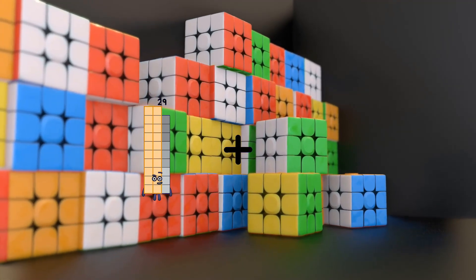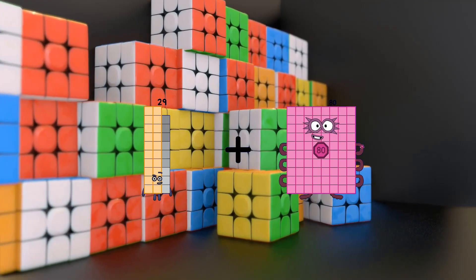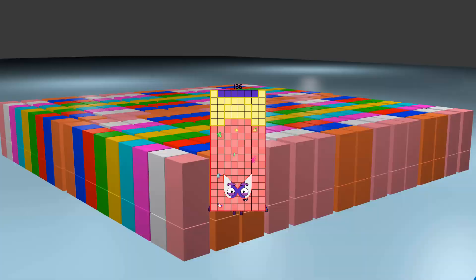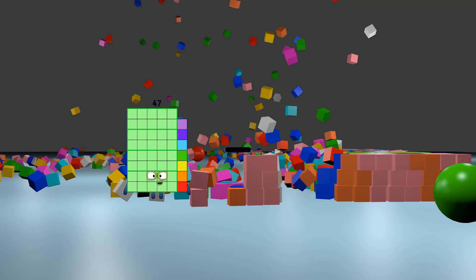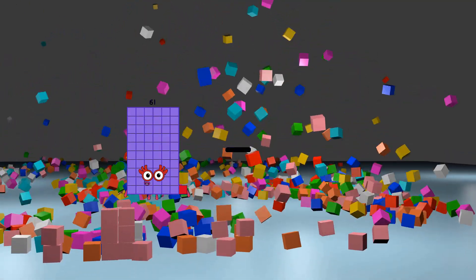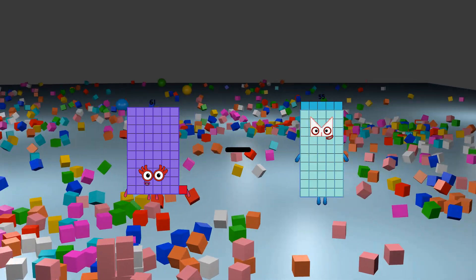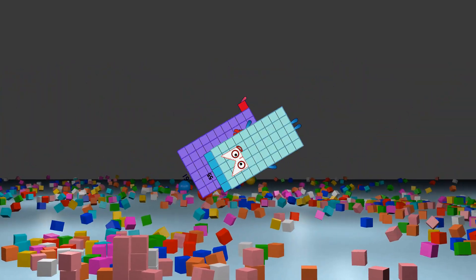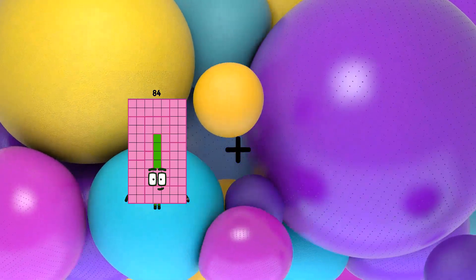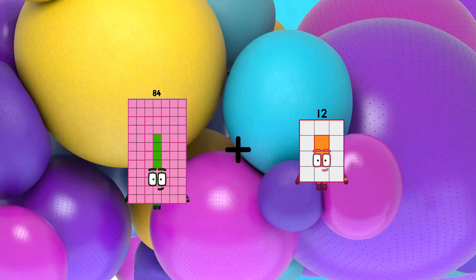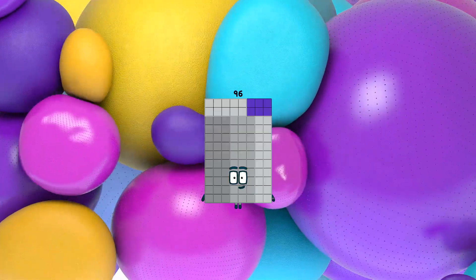29 plus 107 equals 136. 61 minus 55 equals 6. 84 plus 12 equals 96.